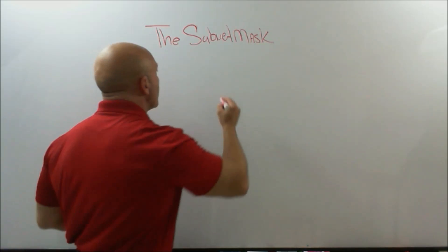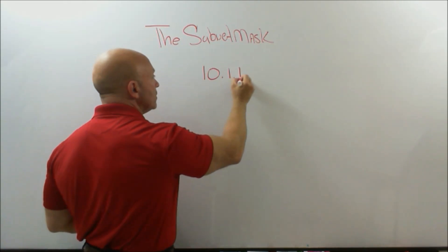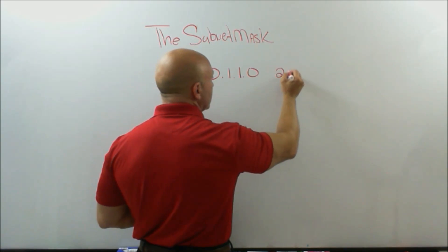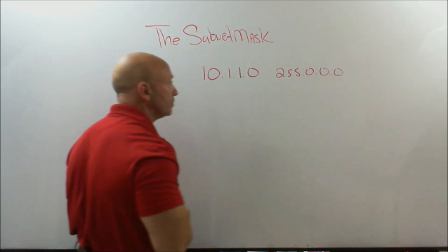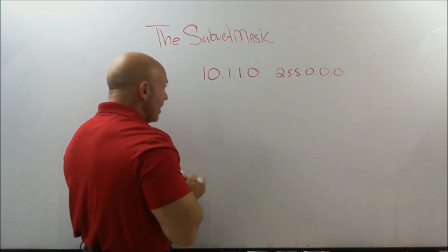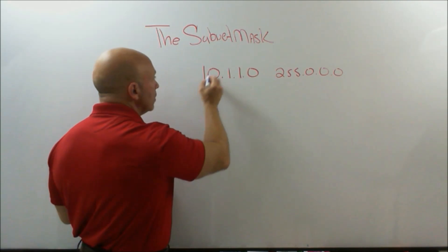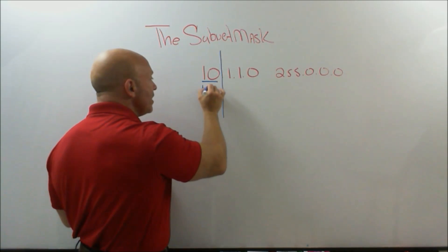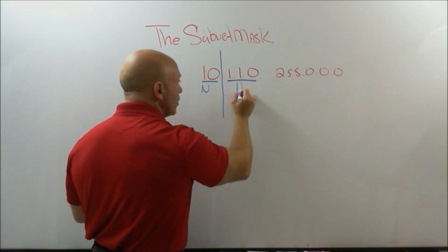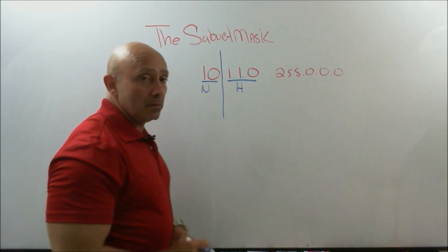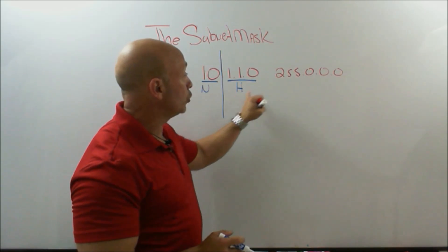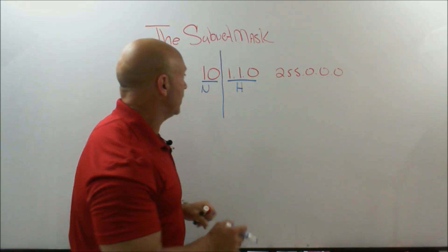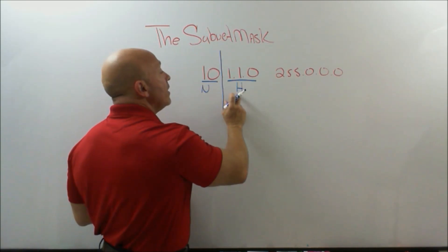You can see how this changes. We have here 10.1.1.0, and let's say we're using a subnet mask of 255.0.0.0. What is that saying? That right there is saying that there's an imaginary line between the first octet and the second octet — that this is the network side and this is the host side. Now this particular address — it ends in zero, but this is an actual host.